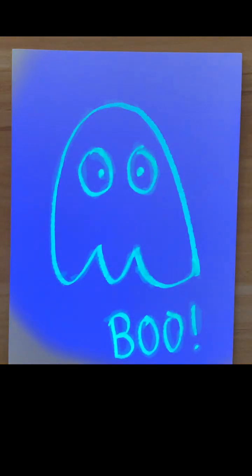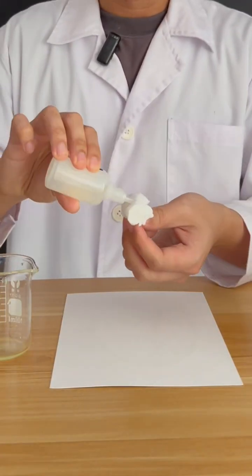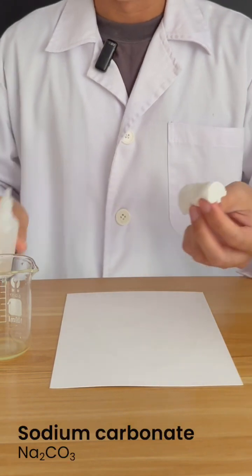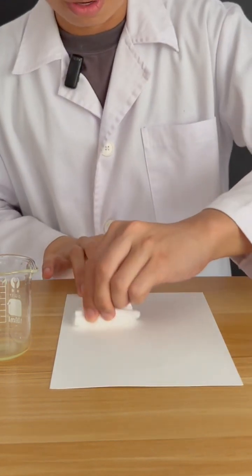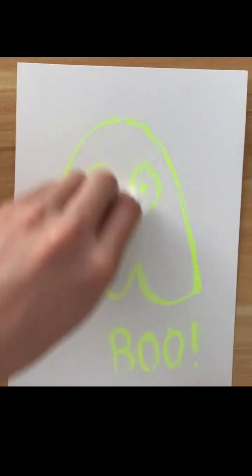It's still visible under UV light. Now what I'm going to do is take a cotton swab, soak it in some sodium carbonate, and just rub it over. Watch how the drawing comes back.